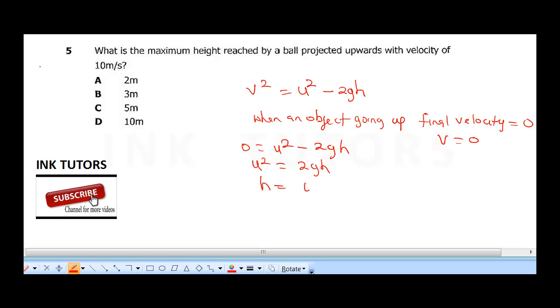Now this means u squared is equal to 2gh. Therefore our h is going to be u squared over 2 times gravity, which means our u is 10, so 10 squared, then 2 times our acceleration due to gravity is 10. This equals 10 times 10 divided by 2 times 10. So 10 cancels out. Our height is 5 meters, so the correct answer here is C.